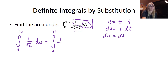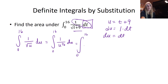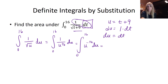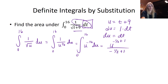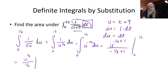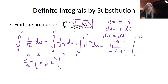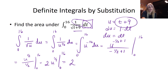So I get the integral from 0 to 16 of u to the negative one half du. Bringing the fraction up it becomes u to the negative one half, and the antiderivative is u to the negative one half plus one, over negative one half plus one — that's u to the one half, evaluated from 0 to 16. I can bring the 2 up. A common mistake is to plug in 16 and forget to substitute back in for u first.